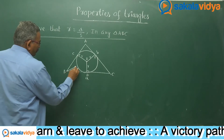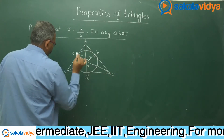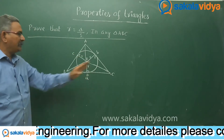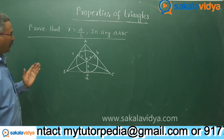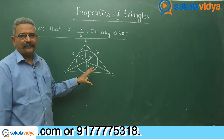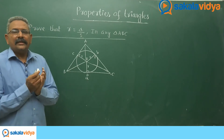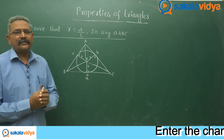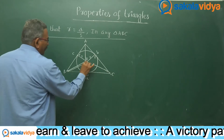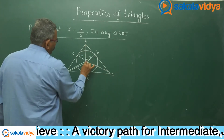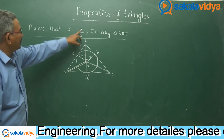Join I to each vertex. So BI, AI, and CI are the angle bisectors of triangle ABC respectively. Now we need to find the area of triangle ABC. Triangle ABC can be divided into the sum of the areas of three triangles: triangle AIB, triangle BIC, and triangle AIC.